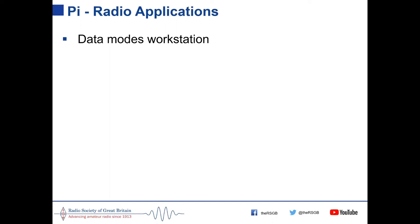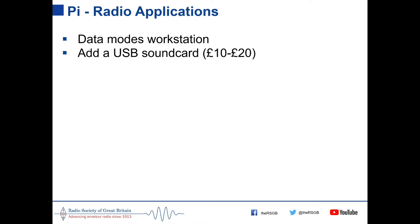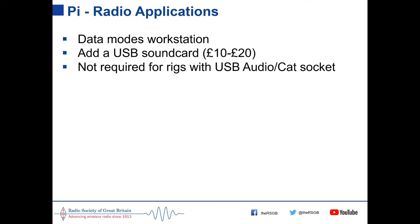The Pi can be used as a data modes workstation, freeing up your main computer. Data modes require audio in and out from the Pi — a USB sound card from UGREEN costs between £10 and £20 and works well. More modern rigs with a built-in USB connector already have an audio card and USB-to-serial adapter for CAT control built in, so only a single USB cable from the Pi to the rig is needed.